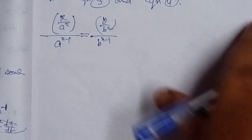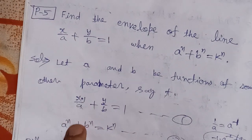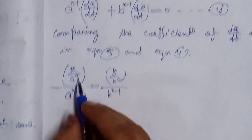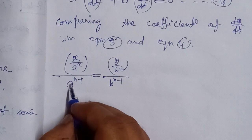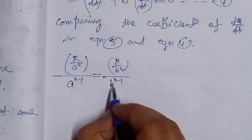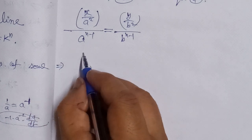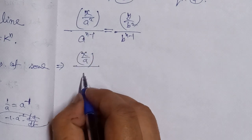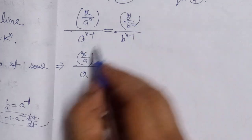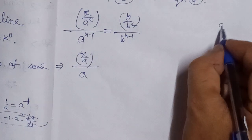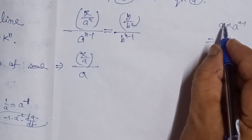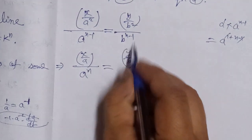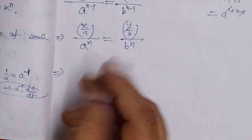Setting the ratios equal, we get x/a² divided by n·a^(n-1) equals y/b² divided by n·b^(n-1). Simplifying the left side: x upon a² times 1/(a^(n-1)) gives x/a^(n+1), and similarly the right side gives y/b^(n+1). So we have x/a^(n+1) = y/b^(n+1).